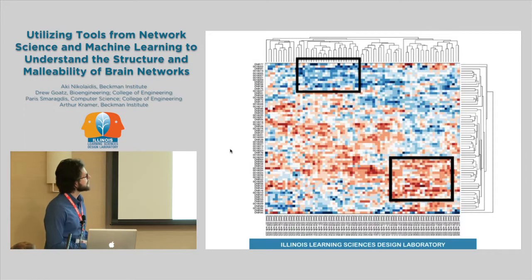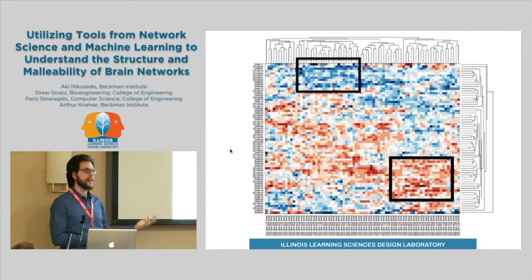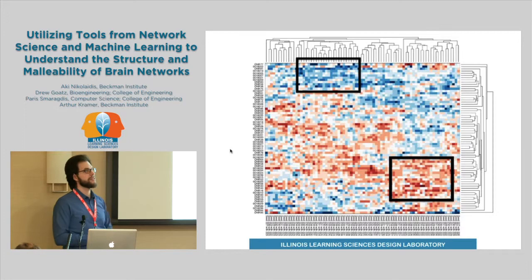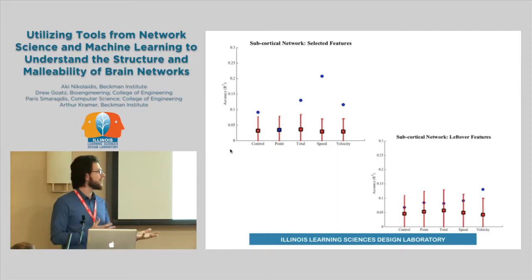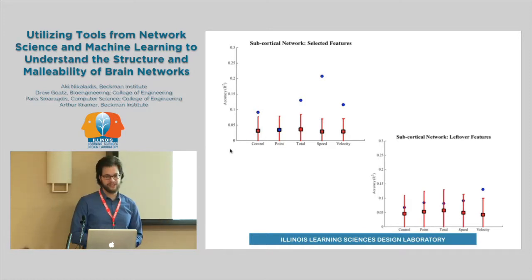Looking back at this cluster visualization, you can see there are two clusters — one up here and one down here. The question was whether this visualization could help us understand not just that the subcortical network more broadly is involved in the procedural learning task, which we already know from neuroscience, but what specifically about the subcortical network is involved. We put that into our machine learning algorithm and found that the upper-left cluster alone could predict with about the same accuracy as the full network. Interestingly, when we looked at the leftovers — the things not in the cluster — we were at chance, meaning there was no informative information left over.